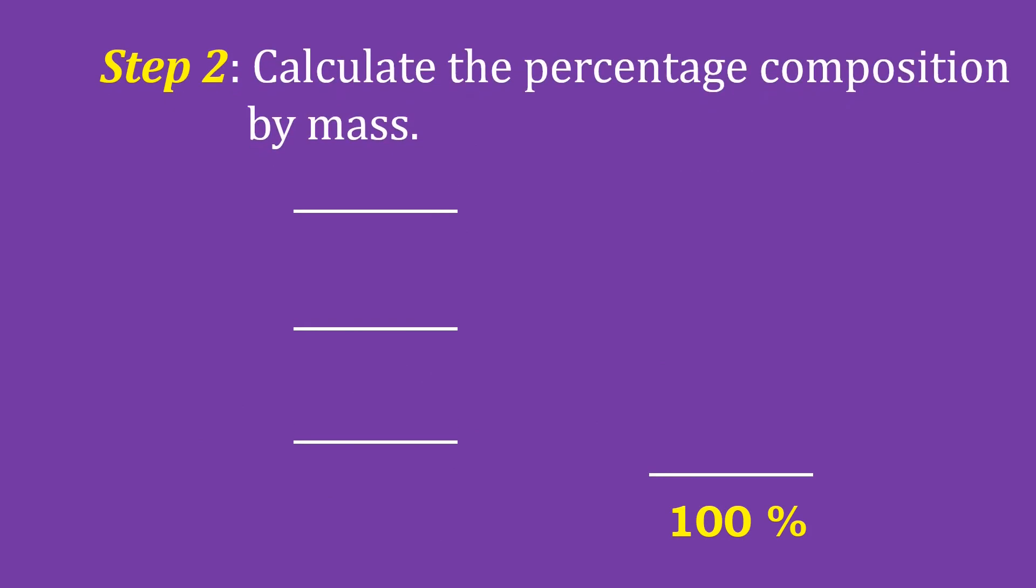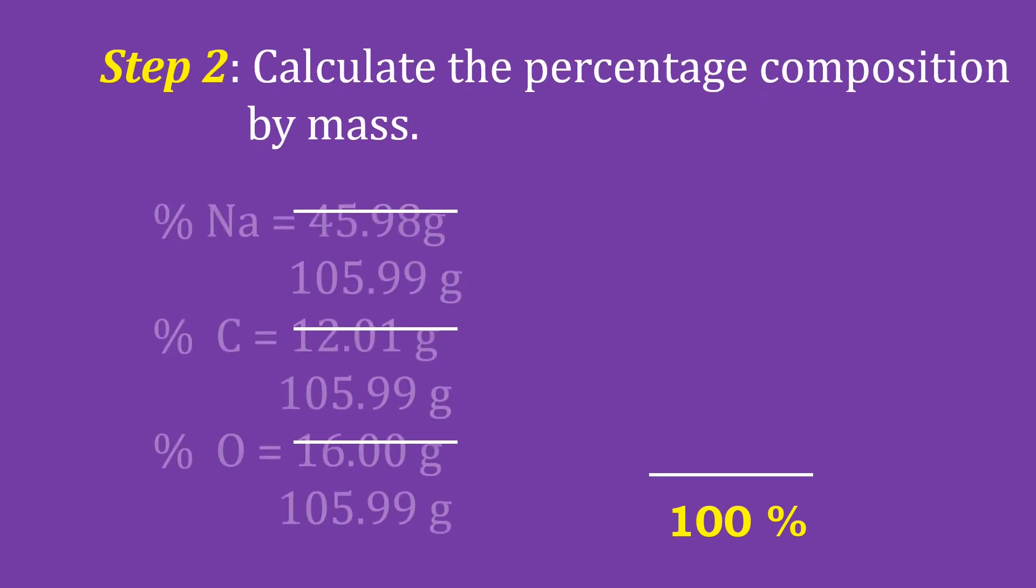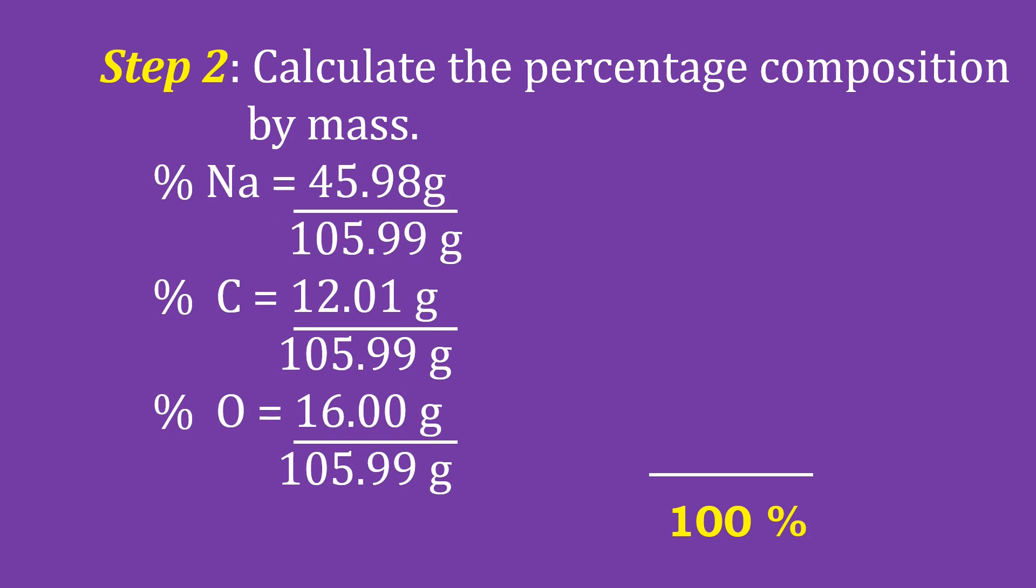Step 2: Calculate the percentage composition by mass. Percentage of sodium equals 45.98 grams divided by 105.99 grams times 100% equals 43.38%. Percentage of carbon equals 12.01 grams divided by 105.99 grams times 100% equals 11.33%. And for the percentage of oxygen equals 16.00 grams divided by 105.99 grams times 100% equals 45.29%. Adding all the percentage composition by mass of the following elements, we will get 100%.